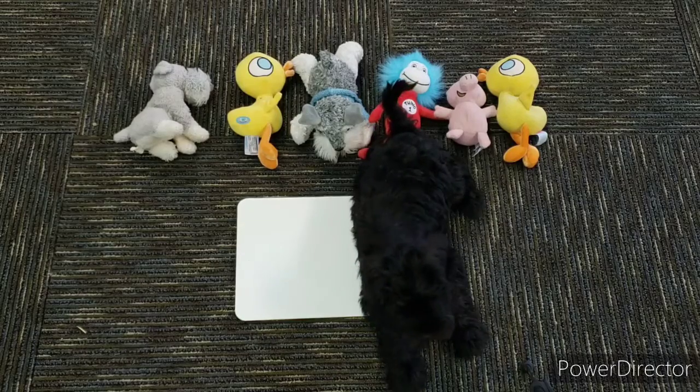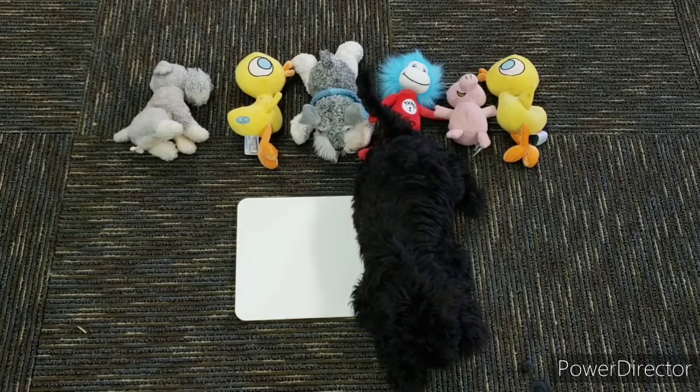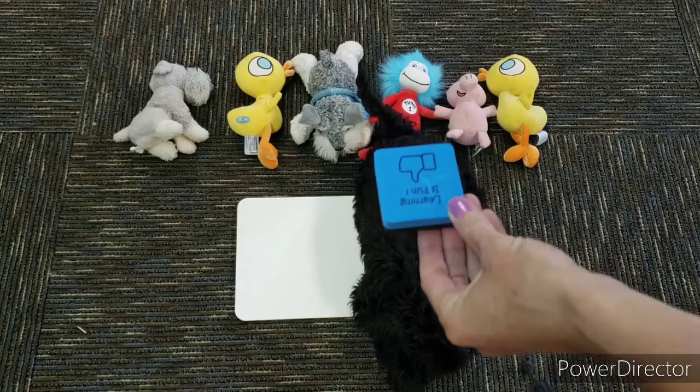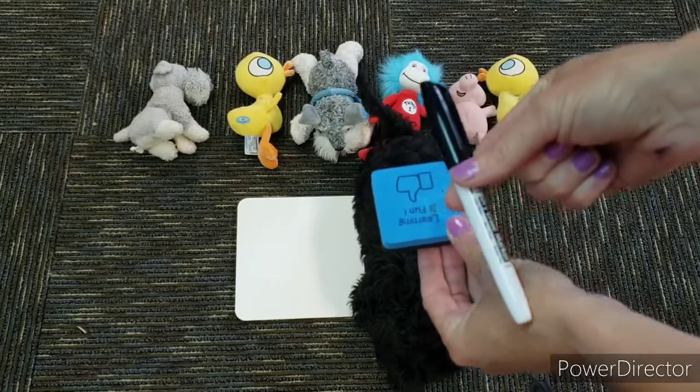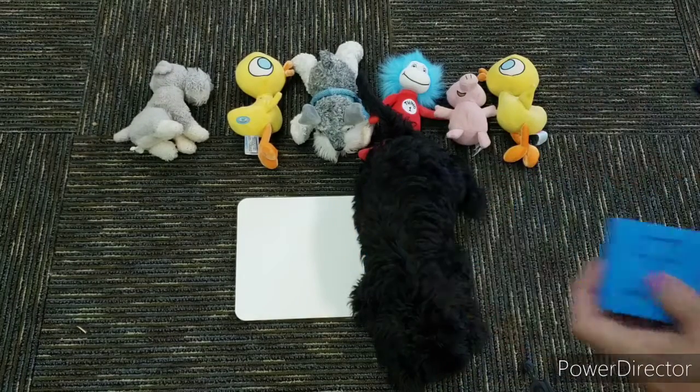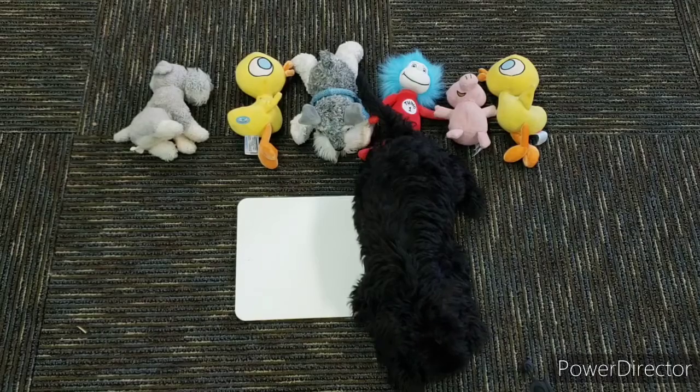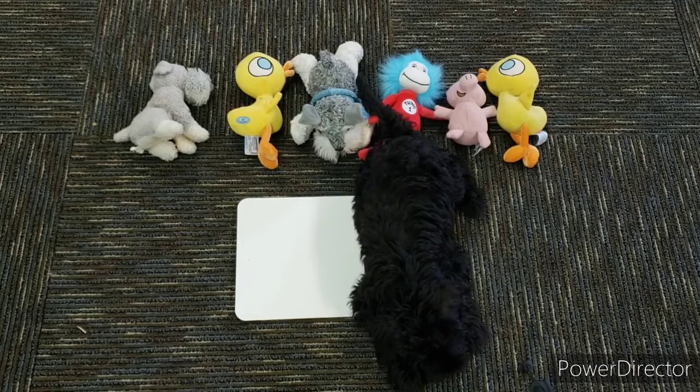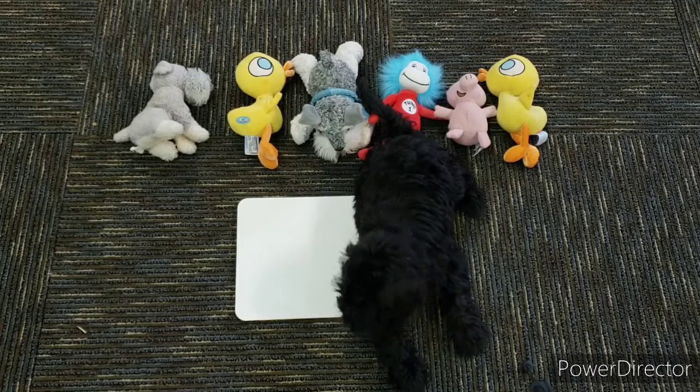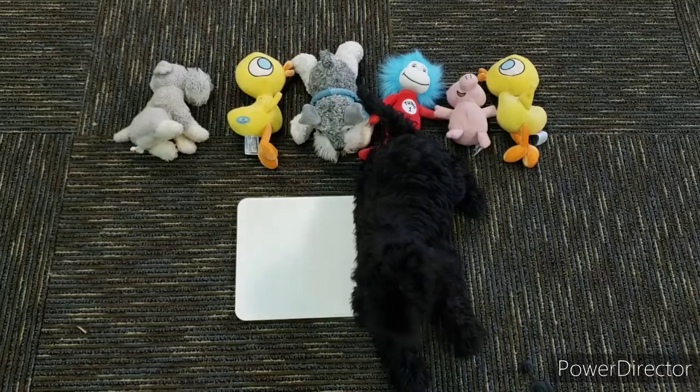So for this activity, you need an eraser, your marker, and a whiteboard. And then I want you to get at least seven stuffies. See if you can go around your house and look and find seven stuffies.